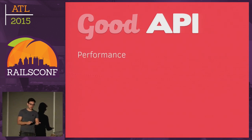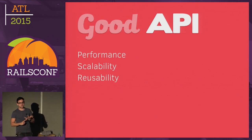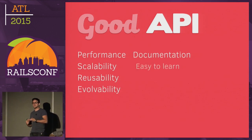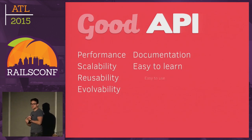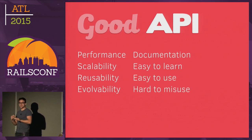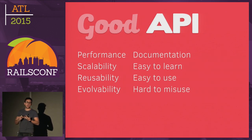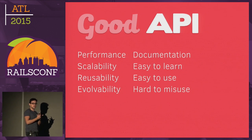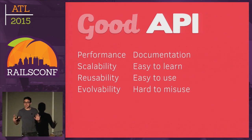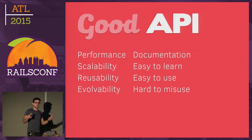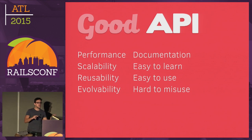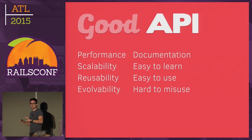What is the definition of a good API? In order to define a good API, there are eight concepts we have to consider. Those eight concepts are: performance, scalability, reusability, improvability, documentation, it must be easy to learn, it must be easy to use, and most importantly, it must be hard to misuse.